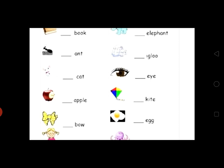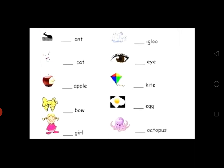Next, 'egg' and 'octopus'. Octopus starts with 'O', which is a vowel letter, so we use 'an': an octopus. If the word starts with a consonant letter, we use 'a'; if it starts with a vowel letter, we use 'an'. You should practice this worksheet at home. Take care of yourself, stay safe, and stay healthy.